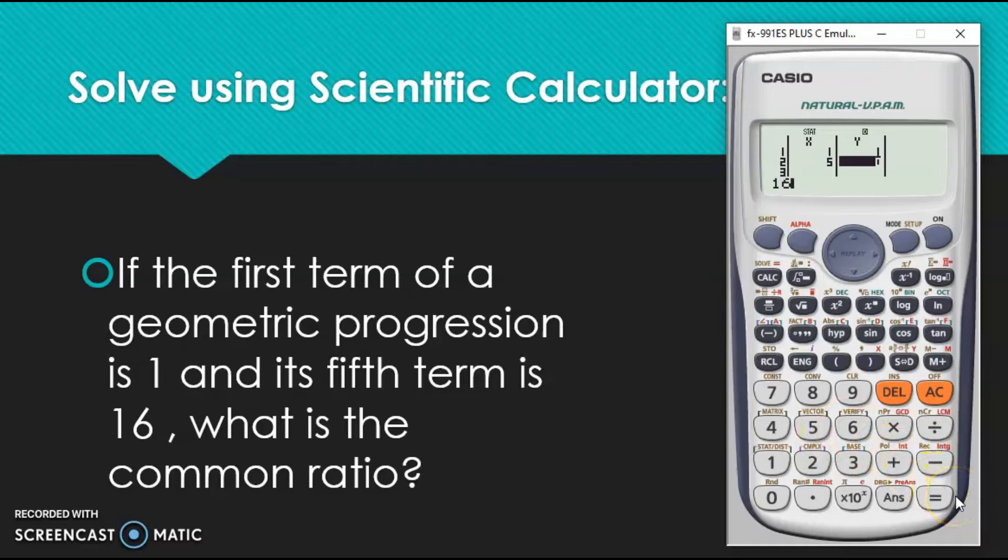After that is to solve for the common ratio. So, AC para ma-store ang values din shift. 1. Then choose number 5.